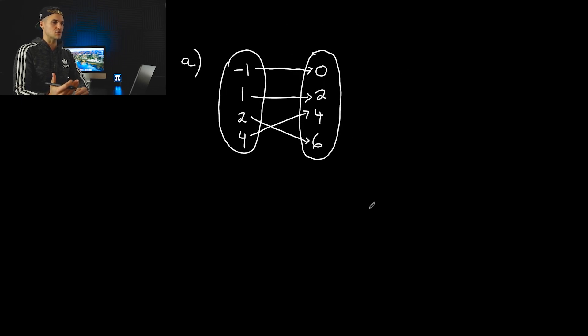Now personally what I like to do is take mapping diagrams and convert them to a table of values. This left circle here basically represents the x values and this right circle here represents the y values. If we were to make a table of values, the number of coordinates is equal to the number of arrows. Each of these arrows represents a single point.